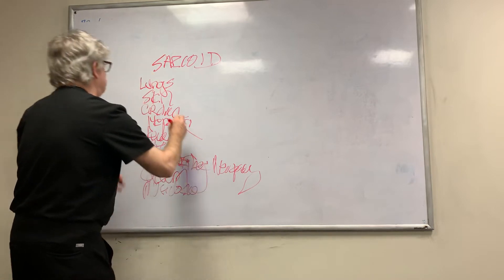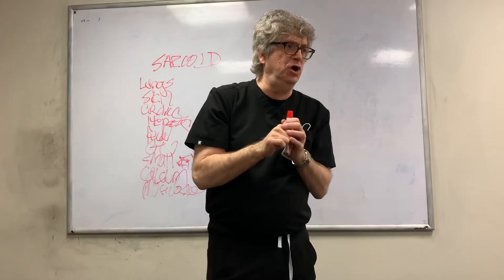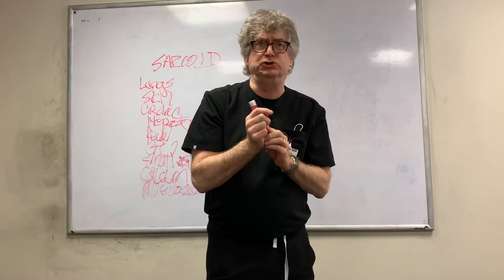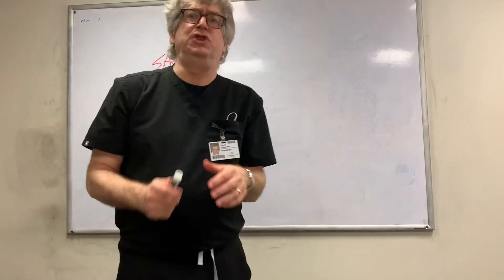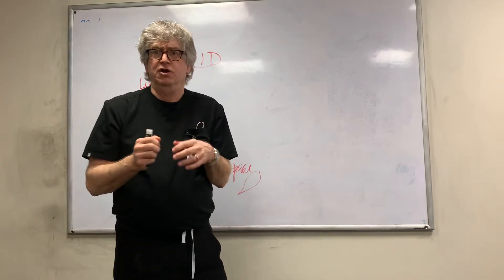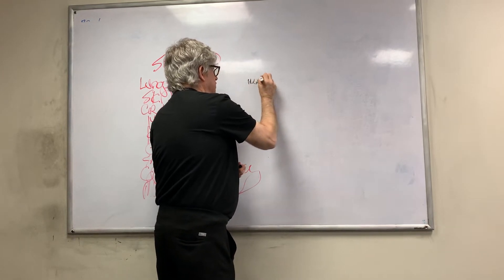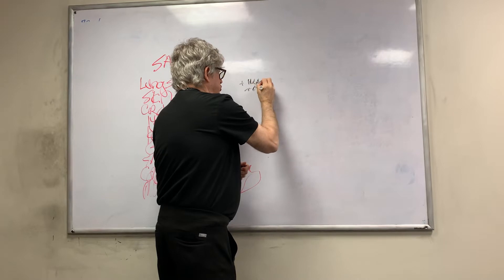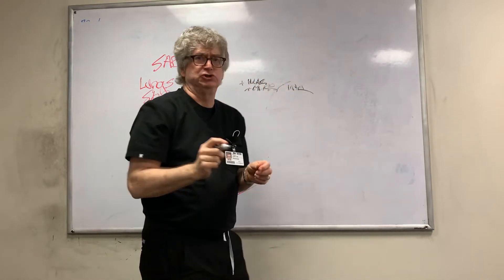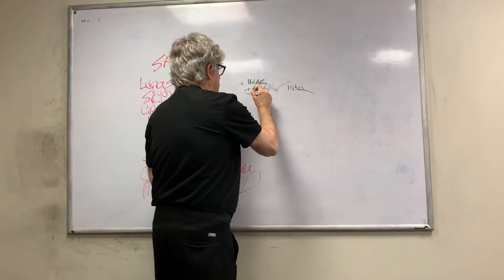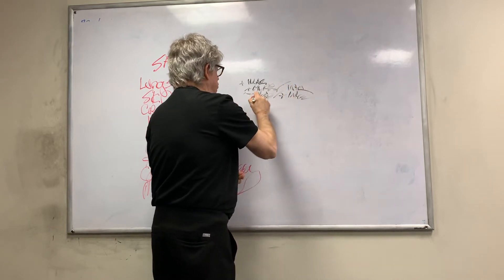Basically sarcoid could involve all organs. The lungs are involved 90% of the time, but the absence of pulmonary involvement does not rule out sarcoid. The classic lung staging: stage one has bilateral hilar nodes; stage two has hilar nodes plus interstitial lung disease, more common in the upper and middle lobe; stage three has no nodes plus interstitial lung disease; and stage four is fibrosis.